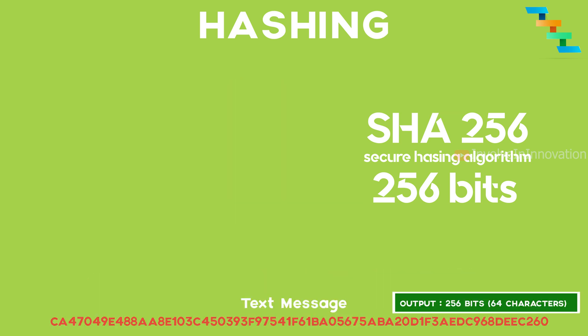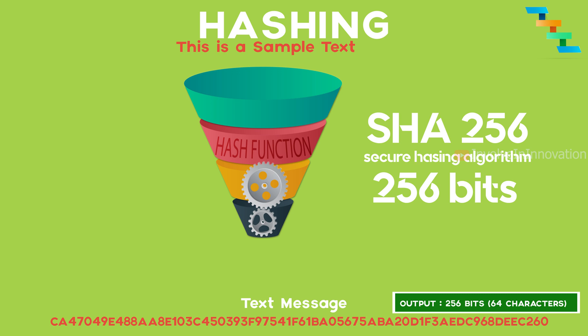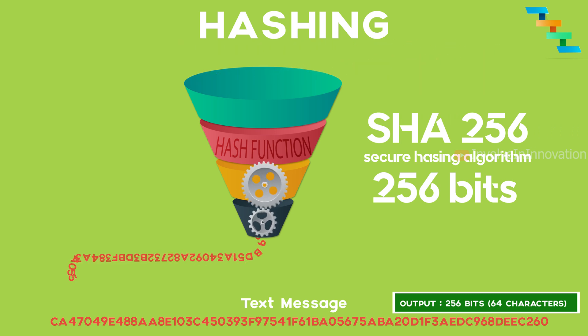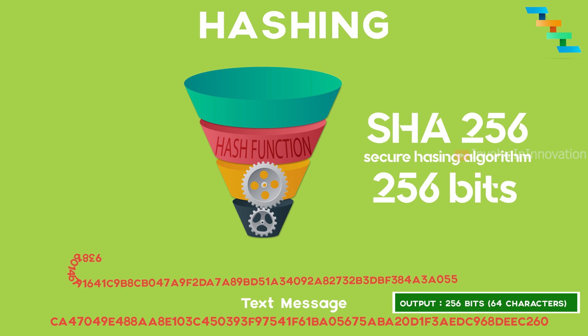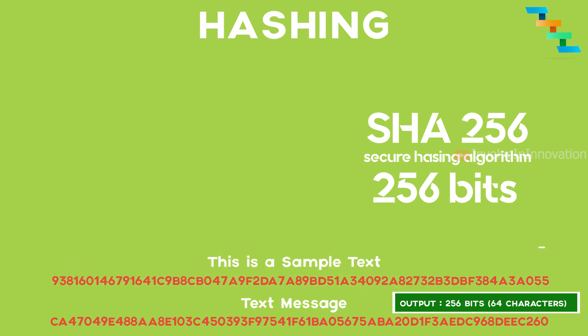Next, we pass 'this is sample text' as input to the hash function. It returns a different 64-character length string. Here the output will be unique for different input values, but the output character length will always be constant — whether it is a single character, a block with one million characters, or even the complete encyclopedia.